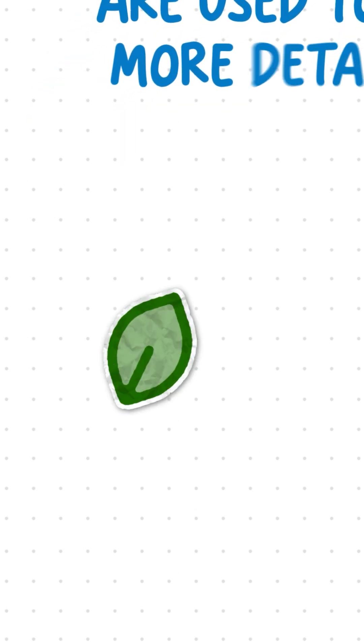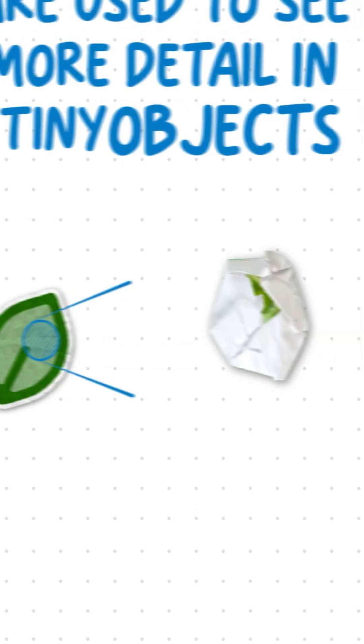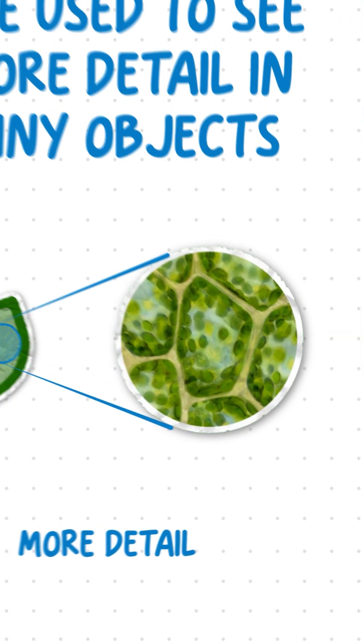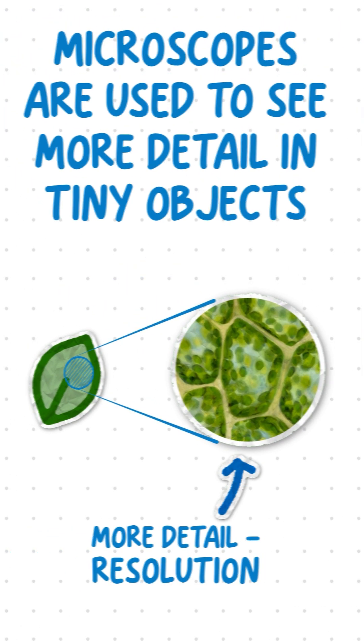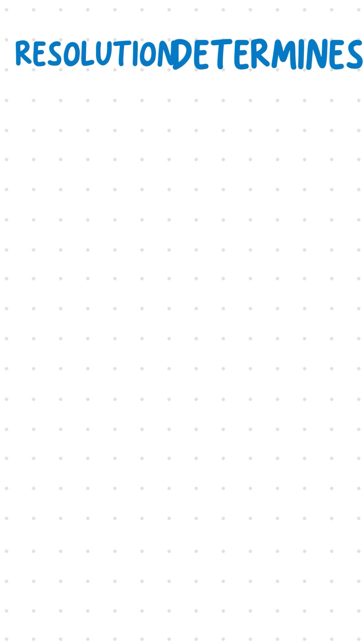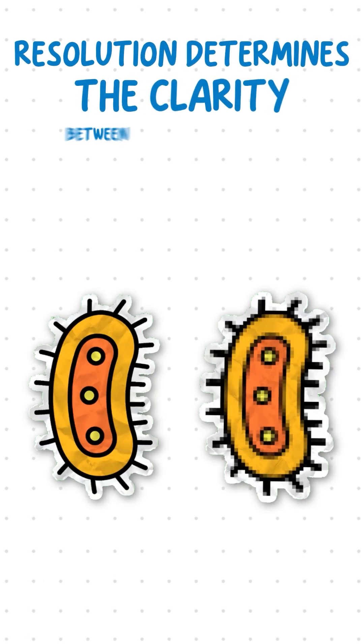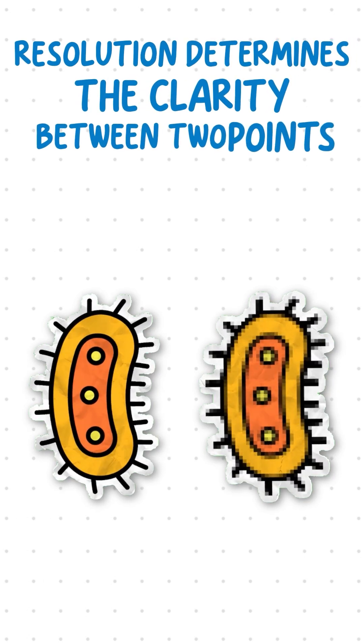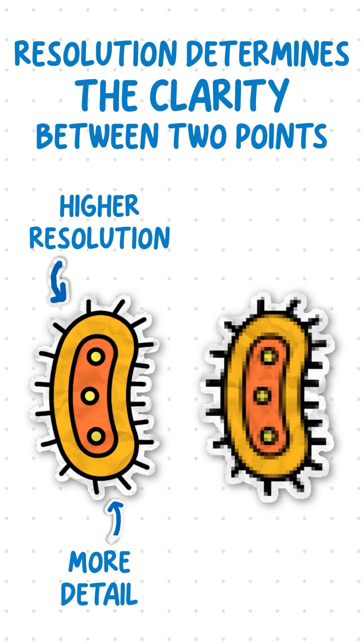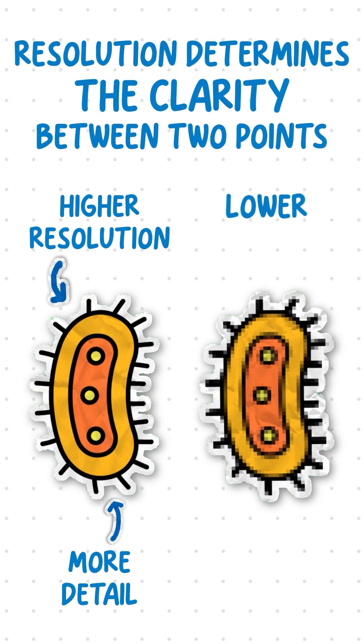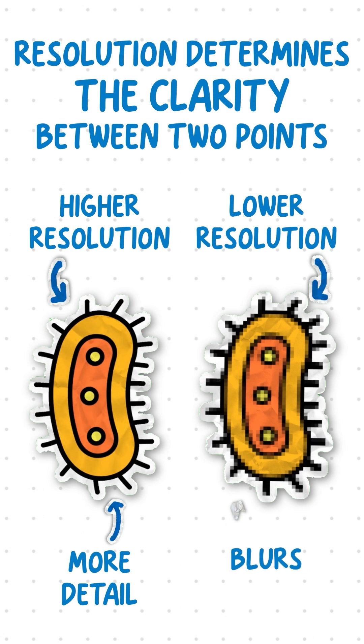Microscopes are also used to see more detail in tiny objects. This is known as resolution. Resolution determines the clarity between two points. Higher resolution shows more detail and lower resolution blurs the image.